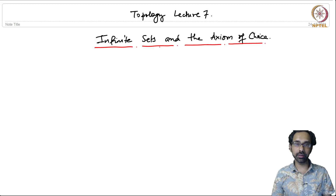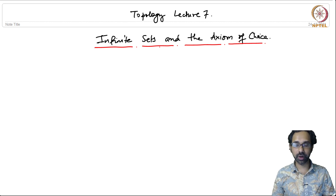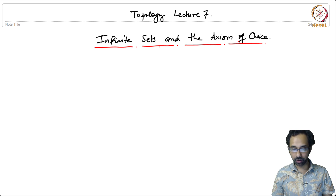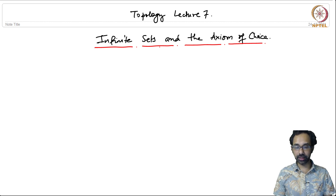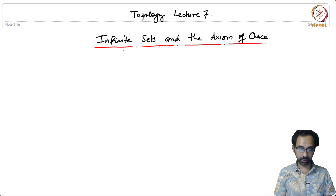In the last lecture, we saw the definition of countable sets and we proved a characterization of countably infinite sets and countable sets. Now, in this lecture, we are going to discuss infinite sets and the axiom of choice.